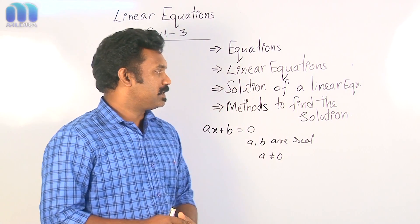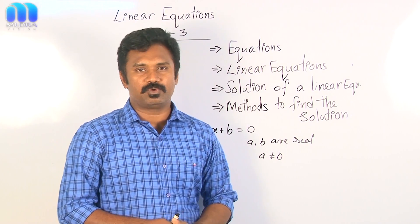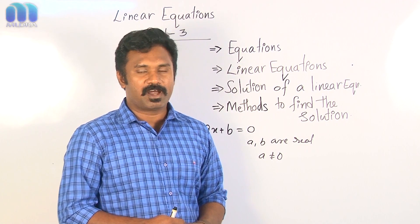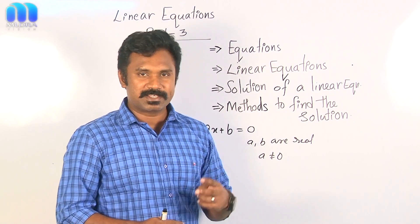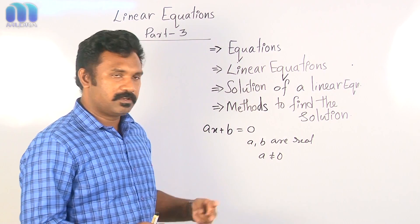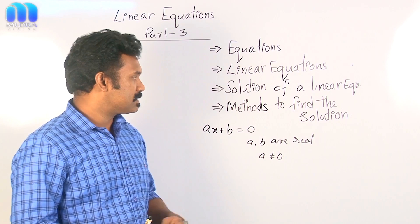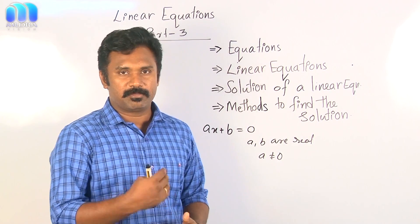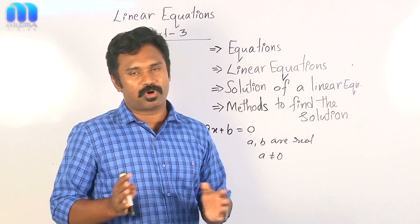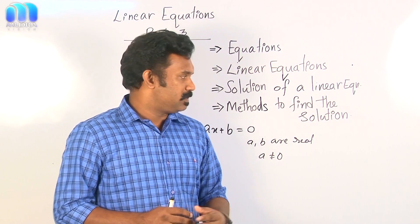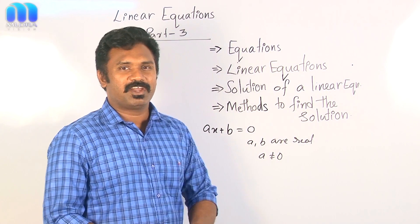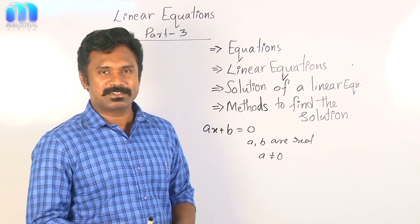The last two topics are methods to find the solution. To find the solution of a linear equation, we have two methods. One is the trial and error method, which we discussed earlier. The second is a mathematical method where we do the same operation on both sides of the equation. These are the main points from the last two classes.